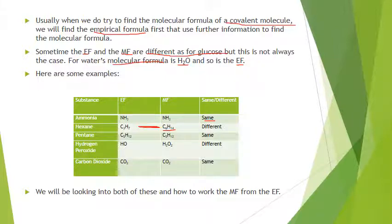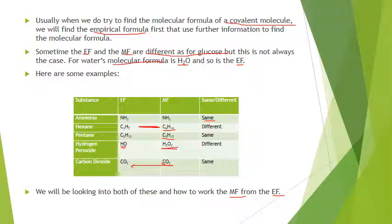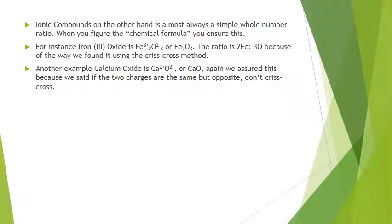Pentane is C5H12 for both the empirical and molecular formula. Hydrogen peroxide has molecular formula H2O2, while the empirical formula is the lowest whole number ratio HO. Carbon dioxide CO2 is both the molecular and empirical formula. So we'll be looking at both types: the molecular formula — exact number and type of elements — and the empirical formula — the relative whole number ratio of elements in a molecule.